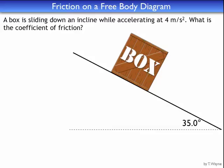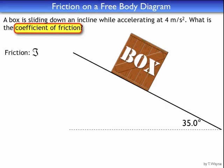To begin solving any problem like this, I need to figure out what forces are involved. Because the problem mentions a coefficient of friction, I know there's going to be friction. Because the box is sitting on a surface, there's a normal force due to the surface. And the box is going to feel the pull of gravity, so it feels weight, which I'll write as mg. So there are my three forces — now I need to make my free body diagram.